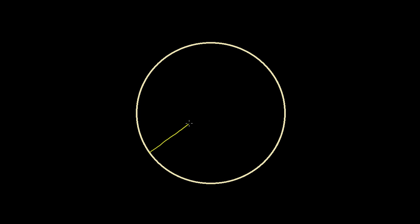Let's say we have a circle, and then we have a diameter of this circle. This right here is the diameter of the circle, or it's a diameter of the circle. And let's say I have a triangle, where the diameter is one side of the triangle, and the angle opposite that side — its vertex — sits someplace on the circumference. So the triangle looks like this.